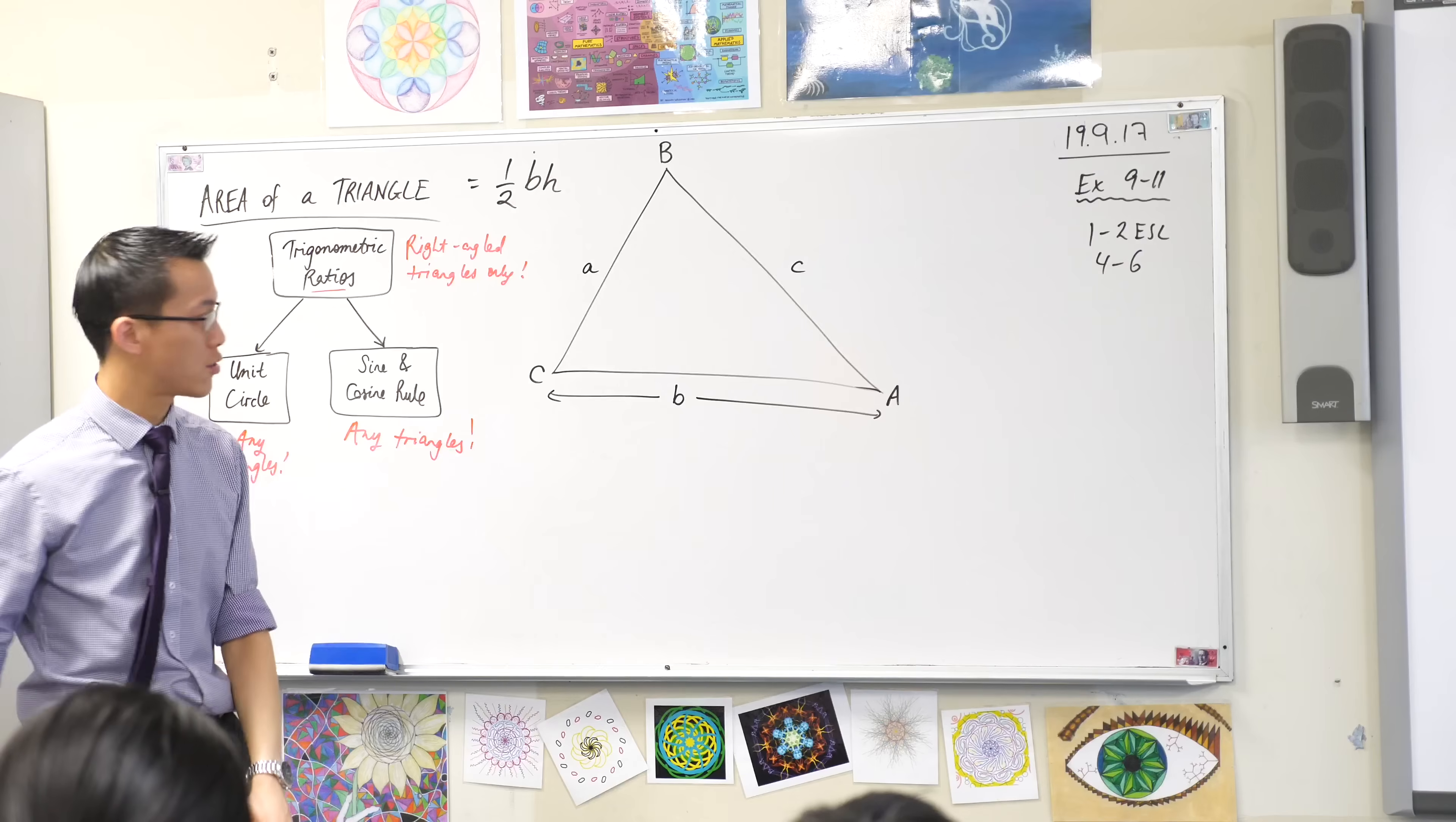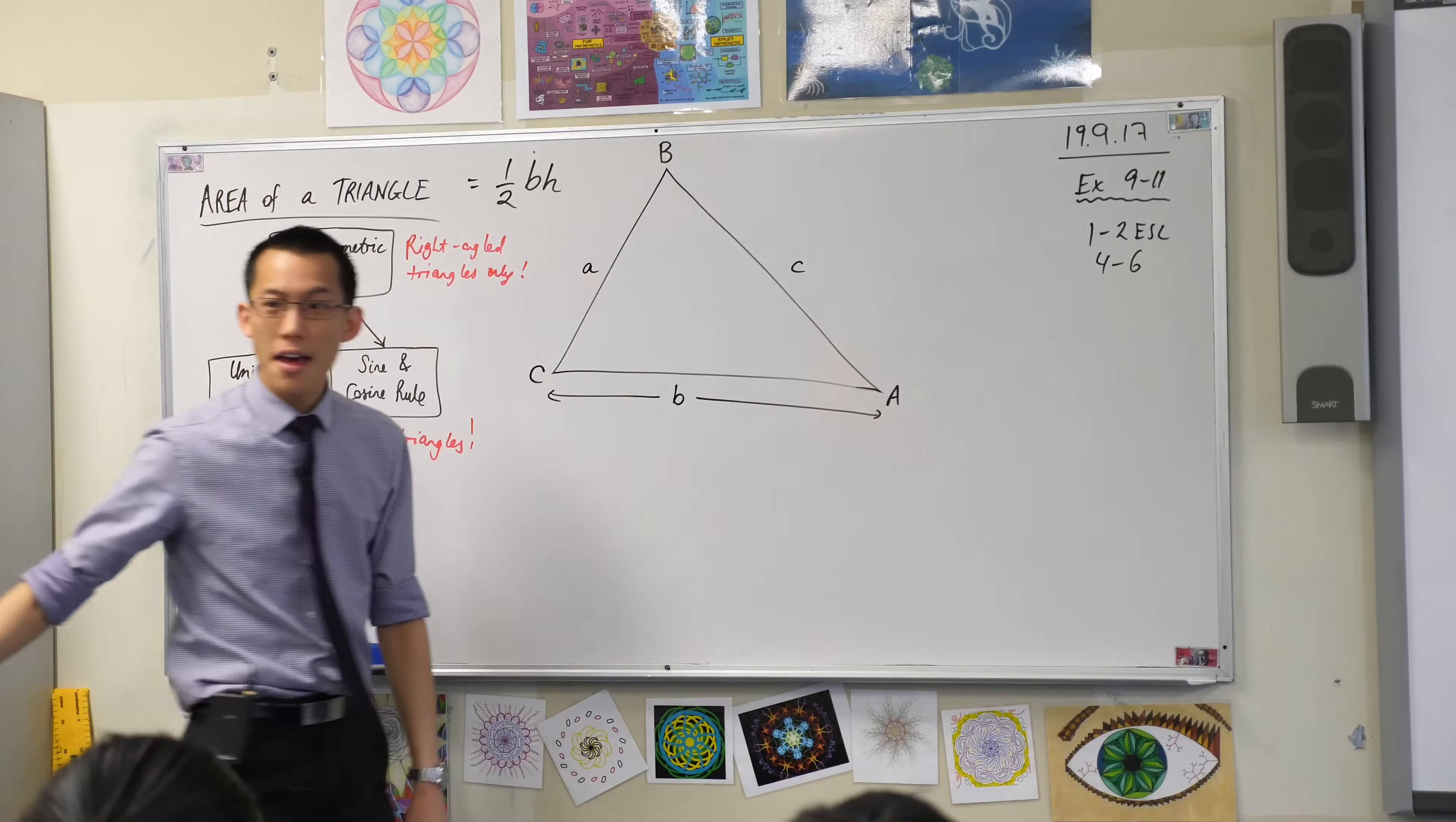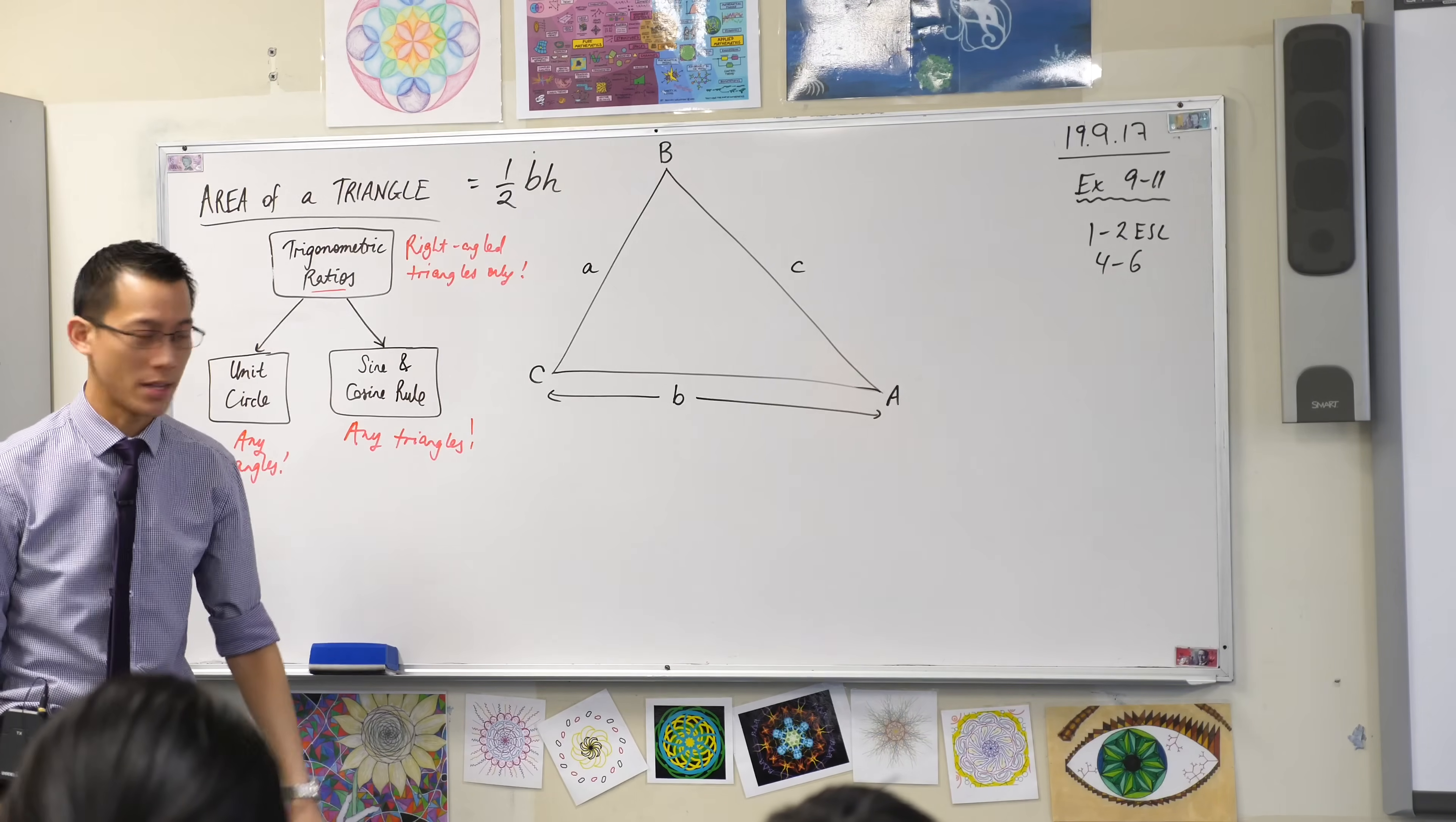So go ahead, draw this triangle. You can see I've got little a, little b, little c. They are all opposite big A, big B, and big C.